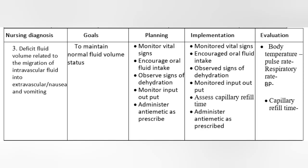Nursing Diagnosis 3: Deficit fluid volume related to the migration of intravascular fluid into extravascular, or nausea and vomiting. Goals: To maintain normal fluid volume status. Planning: Monitor vital signs. Encourage oral fluid intake. Observe signs of dehydration. Monitor input and output. Administer antiemetic as prescribed. Implementation: Monitored vital signs. Encouraged oral fluid intake. Observed signs of dehydration. Monitored input and output.